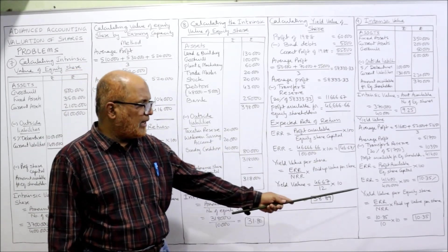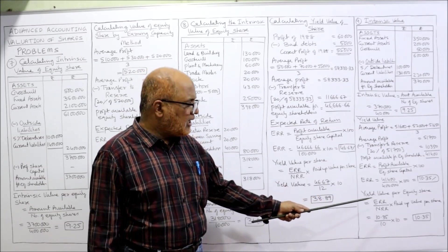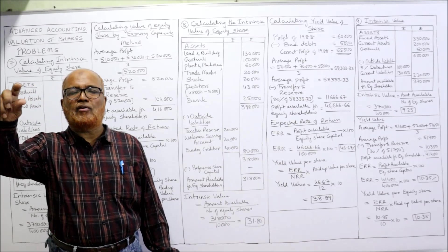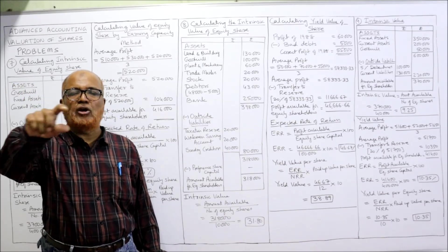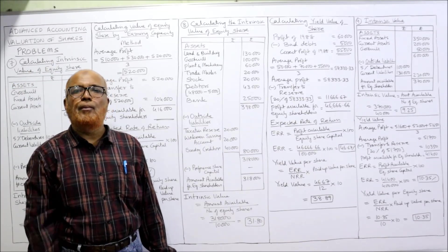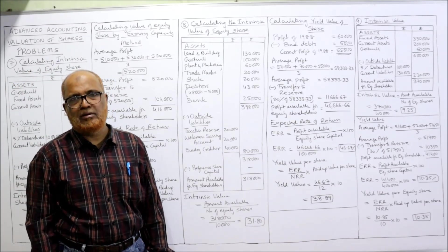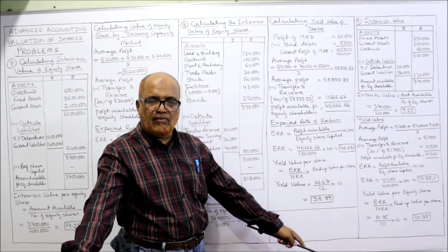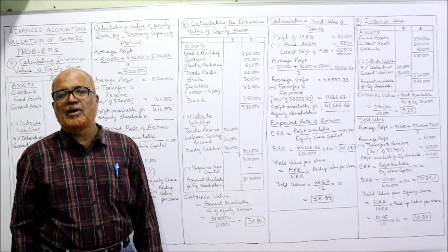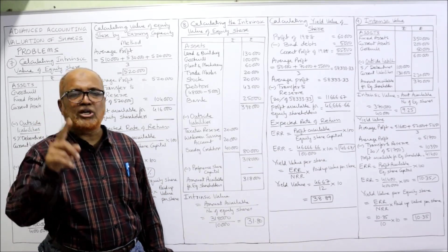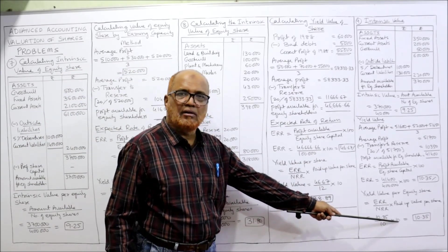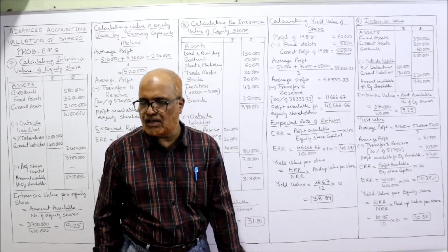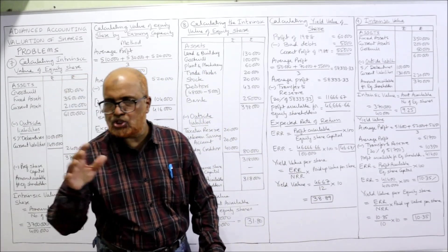Expected rate of return: 10.35%. Now yield value per equity share = ERR ÷ NRR × paid-up value per share = 10.35 ÷ 10 × 10. The 10s cancel, so 10.35 is the yield value of equity share.